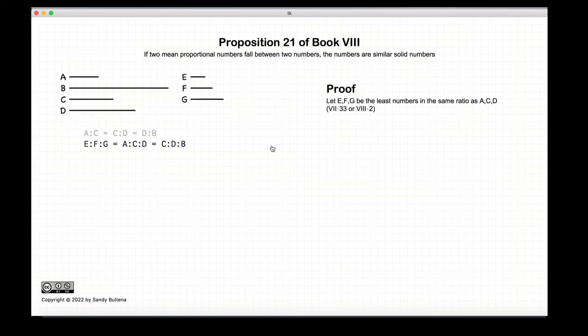So let's prove this. First, we are going to construct three numbers, e, f, and g, where they are the least numbers in the same ratio of a, c, and d. And because of this, because they are the least, we know that e and g are relatively prime.